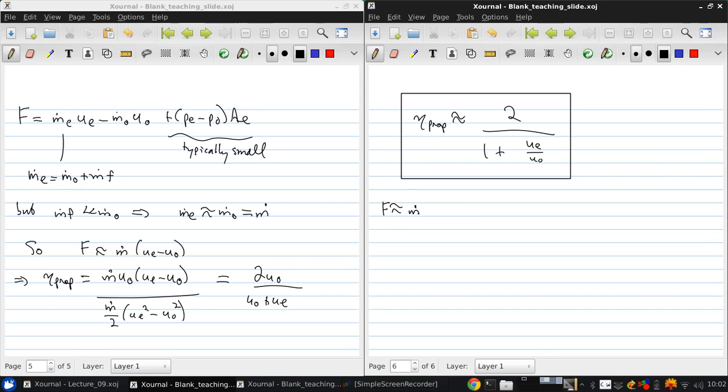So since the thrust is approximately m dot times ue minus u0, and the propulsive efficiency is 2 over 1 plus ue over u0, then we can write this as f divided by m dot u0, so that this non-dimensional term is ue over u0 minus 1.